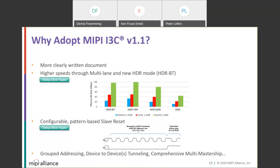We're offering higher speeds and more efficiency through multi-lane, and introducing a new HDR mode — HDR BT. With the addition of dual and quad lanes, I3C is now available at an effective approximately 100 Mbps range when running up through quad lane. We've added a configurable pattern-based slave reset — as opposed to a timeout, which would require all devices to have timekeeping — this is a pin-toggling based reset where SCL is held low and 14 transitions on SDA, then a repeat start and stop, resets devices on the bus.